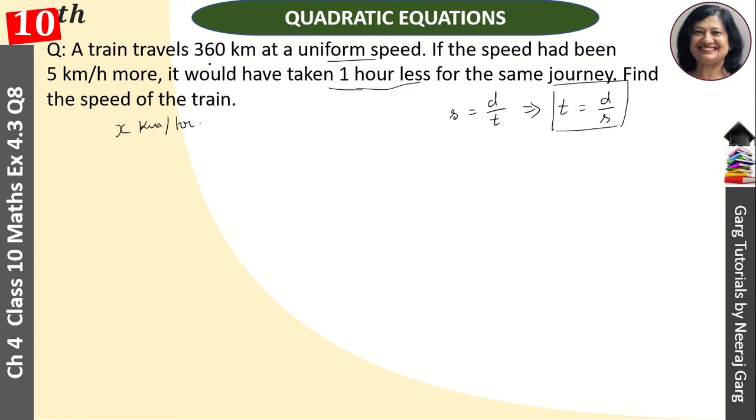When this uniform speed is going, how much time will be? So, time is equal to t1. Distance is 360 and speed is x.